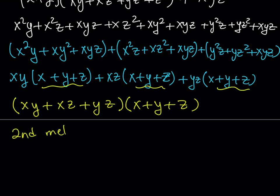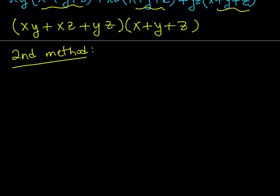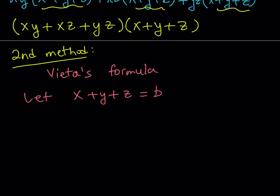Let's talk about the second method. The second method is different — it's kind of Vieta style. What does Vieta style mean? We have a video on Vieta's formulas, so I'll put the link in the description. Vieta's formulas are very important; I don't want to go into too much depth but I'll use one of them briefly. So let x + y + z equal b.